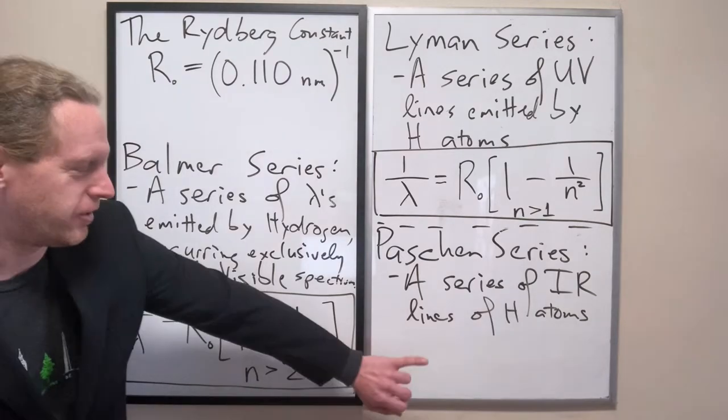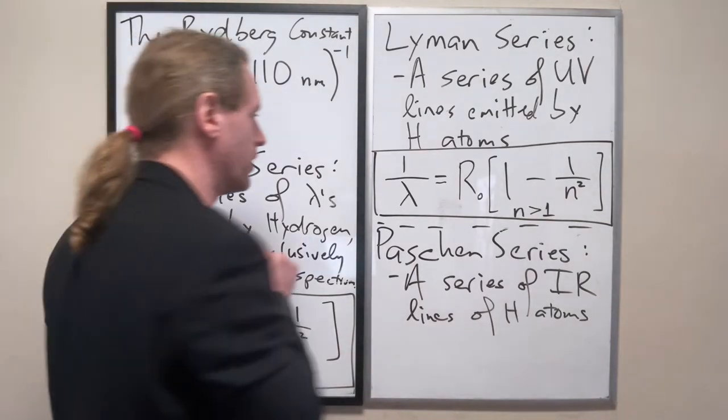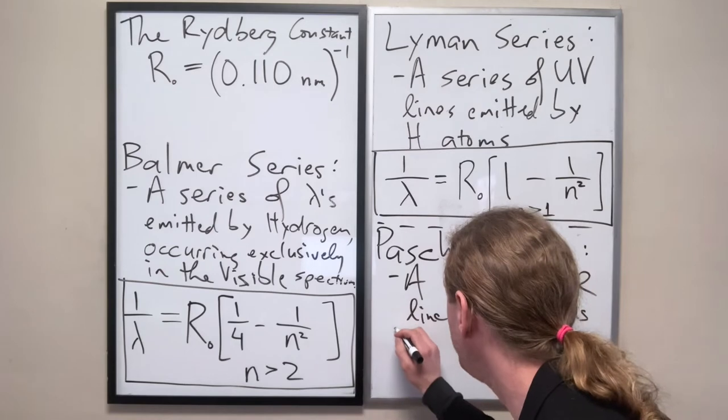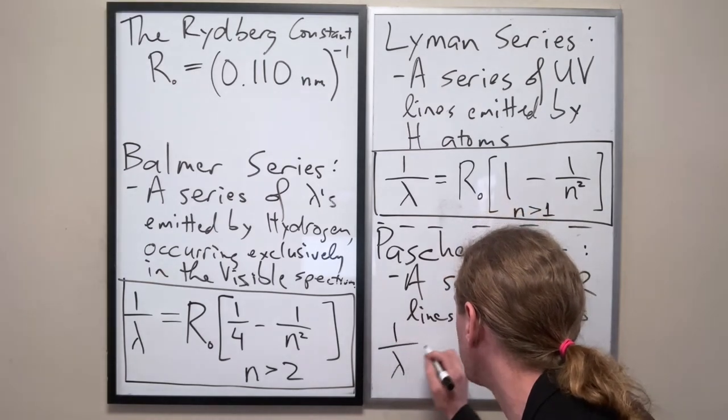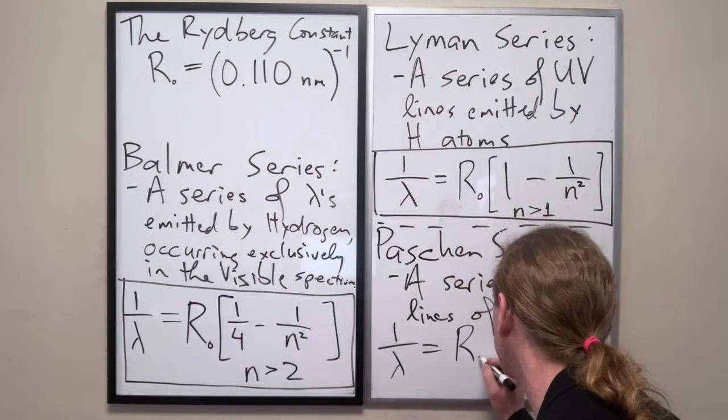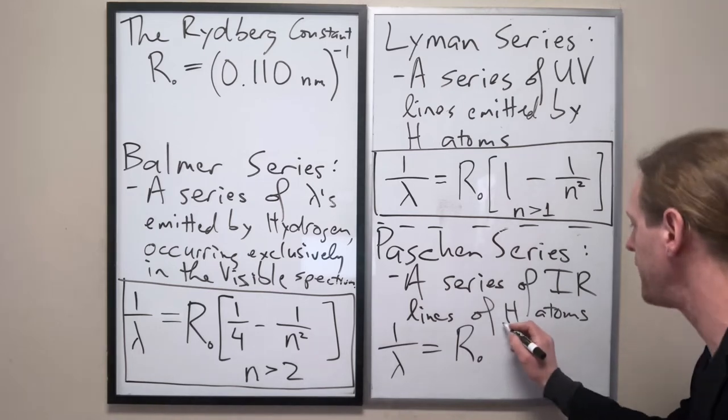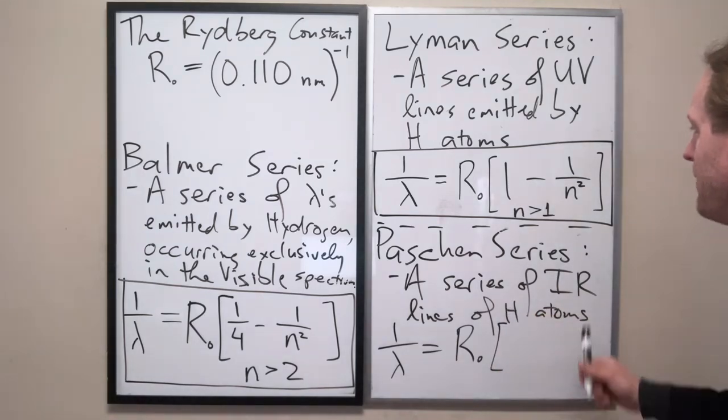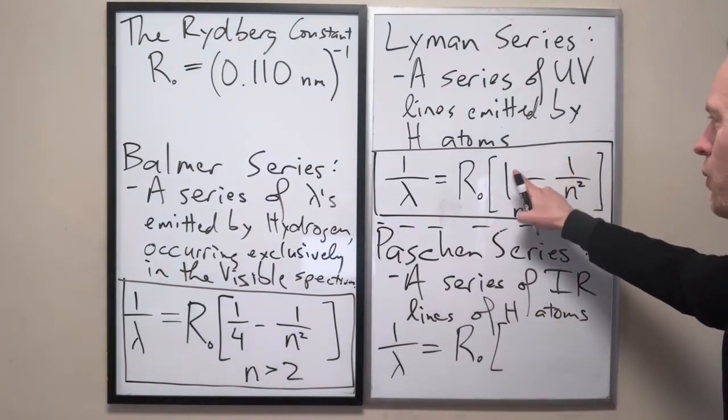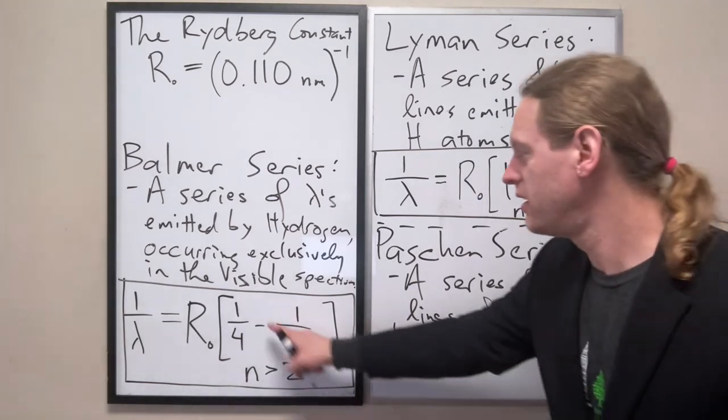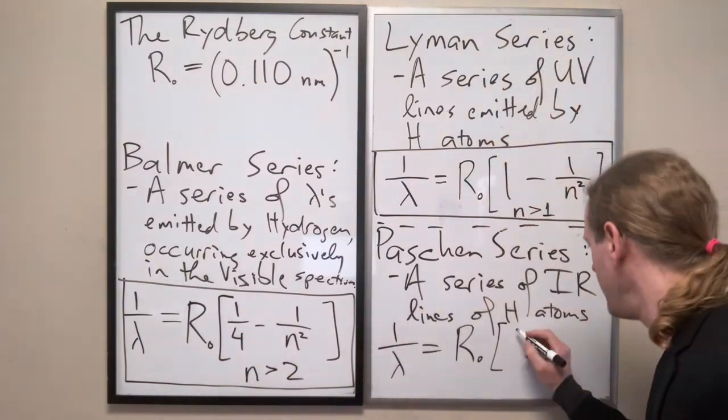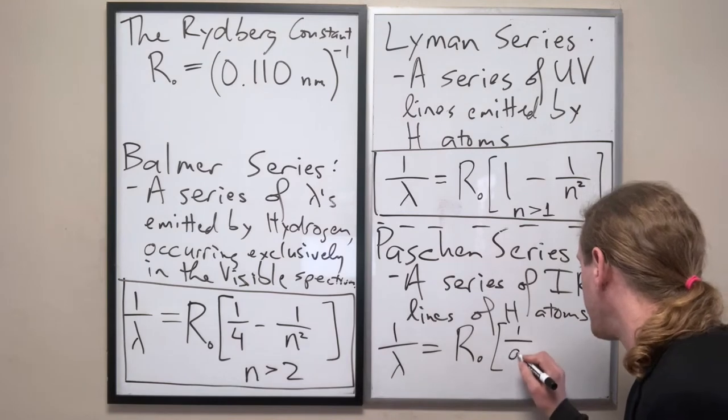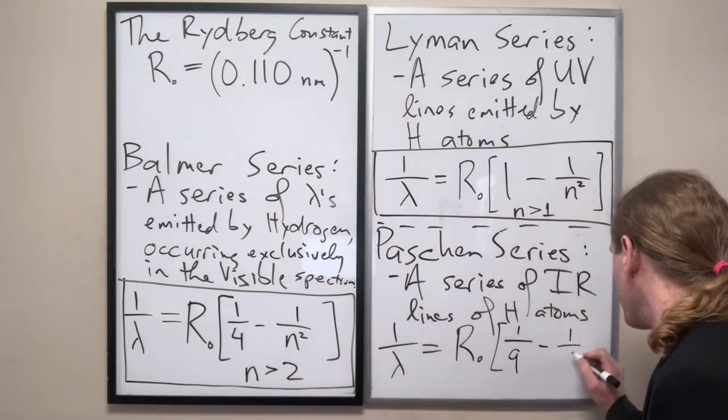Now as you might guess the next one's going to look almost exactly the same. 1 over lambda equals Rydberg's constant, but this time multiplied by - it's not 1 minus 1 over n squared, it's not 1 over 2 squared minus n squared, it is 1 over 3 squared or 1 ninth minus 1 over n squared.